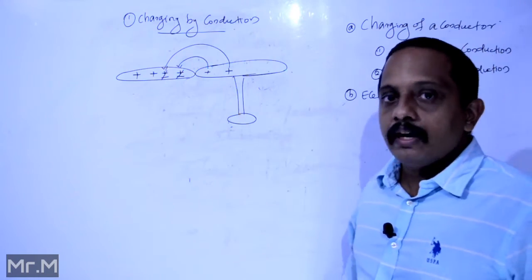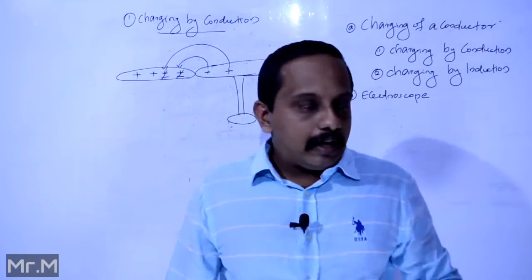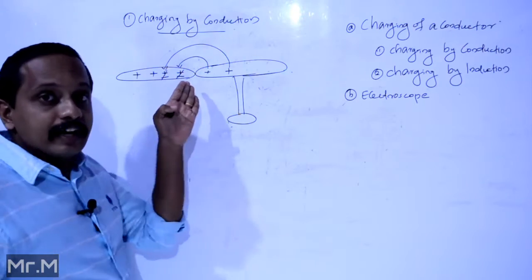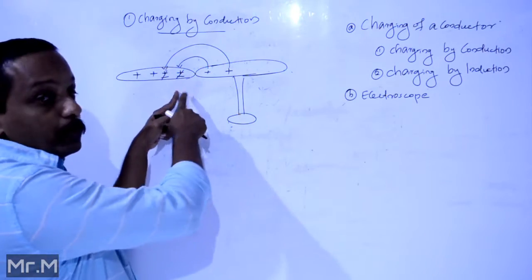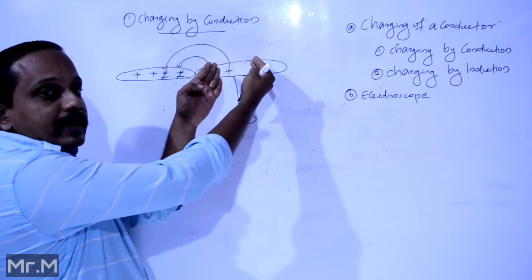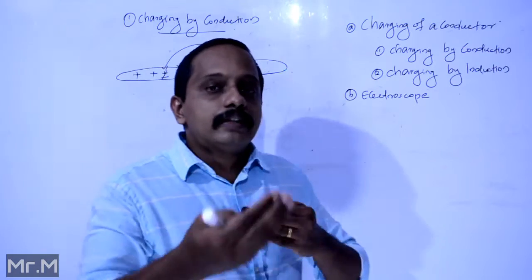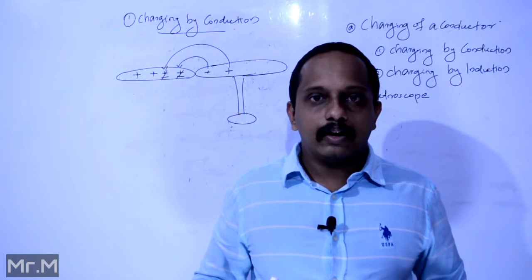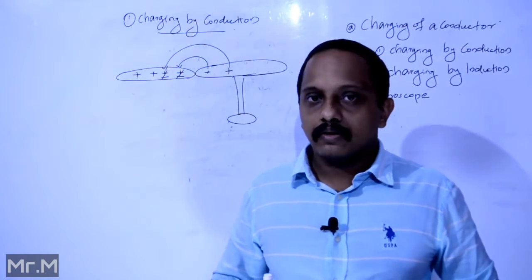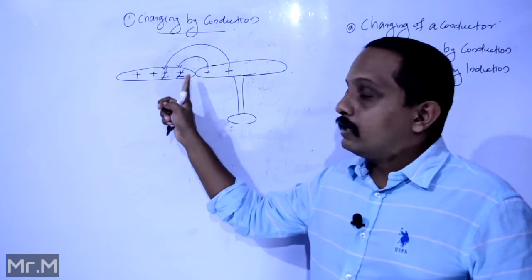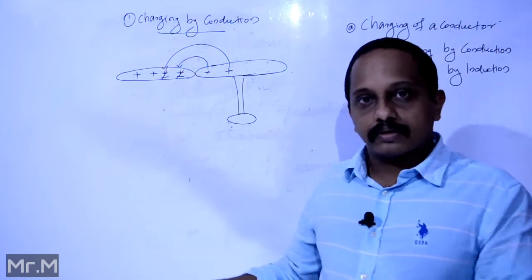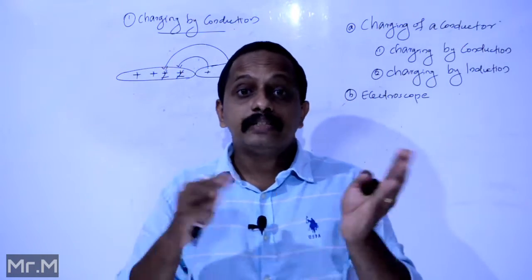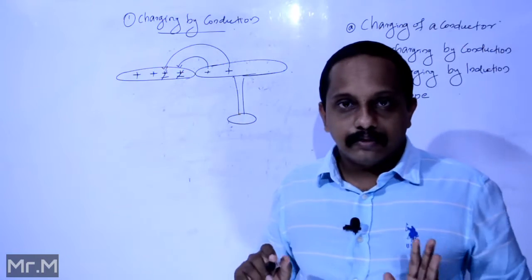Charging by conduction: an uncharged object on an insulating stand and a charged object brought in contact with the uncharged object. If the charged object is positively charged, then some electrons may be transferred from the uncharged object to the charged object. Therefore, the uncharged object loses electrons and it becomes positively charged. There is a physical contact between the charged object and the object which is to be charged.